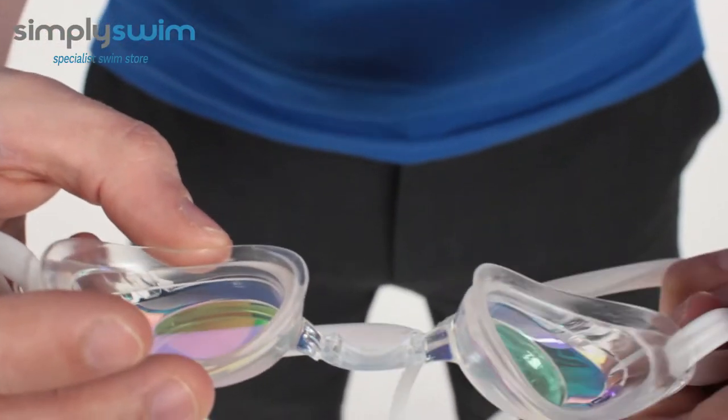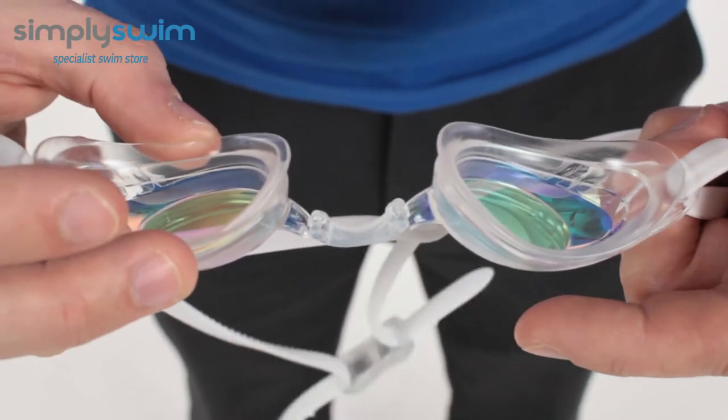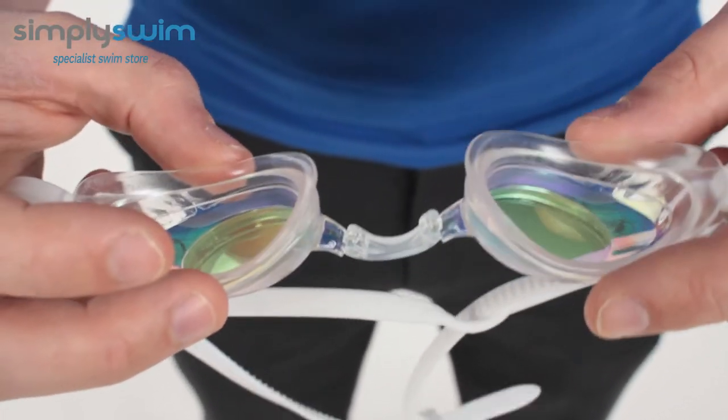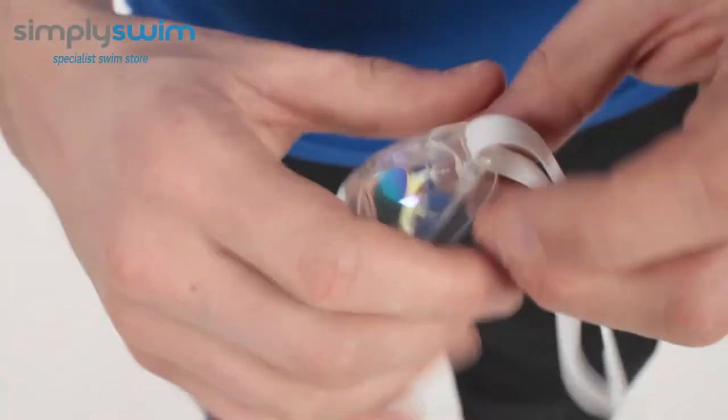You've got a nice tint on the lens, so when you're swimming in the open water, it just means it's going to make things a little bit more clearer underwater. As you can see, you've got your traditional split strap system on the back there for easy adjustment.